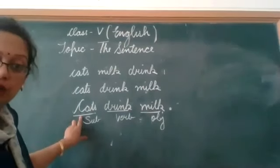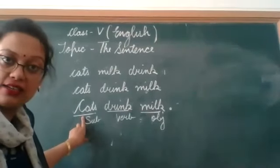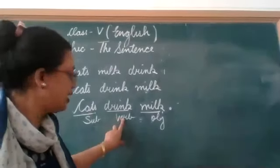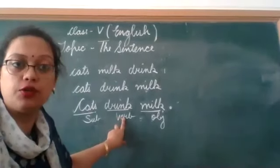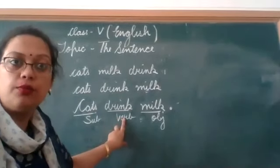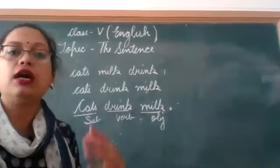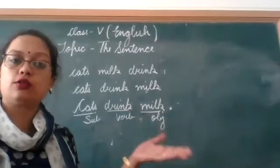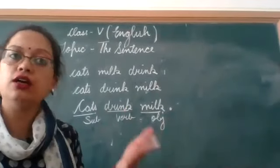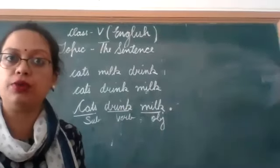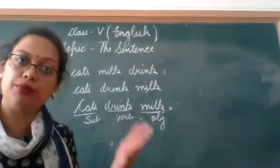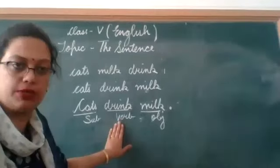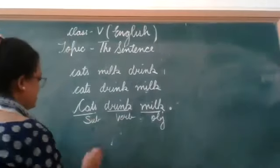The word 'cats' is the subject. Next thing we have is the verb. Verb can be an action word. It can also be a helping verb — an action word or a helping verb, both can be a verb.